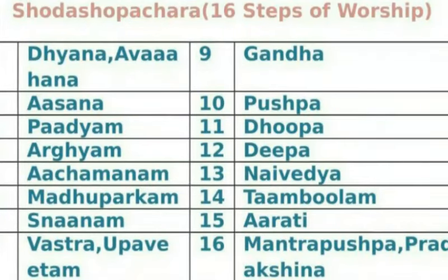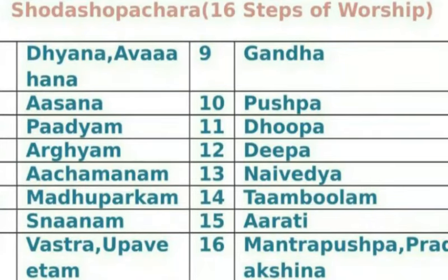Number 9 is Ganda — we have to offer sandal powder. That is Ganda. Number 10 is Pushpa — we have to offer flowers. Number 11 is Dupa, which means smoke that gives a good fragrance. Number 12 is Deepa — that means we have to light the lamp. After lighting the lamp, we will worship the God.